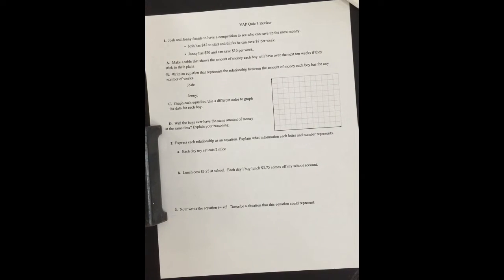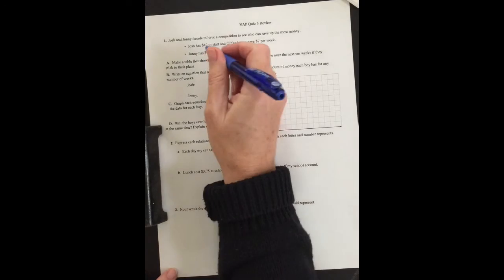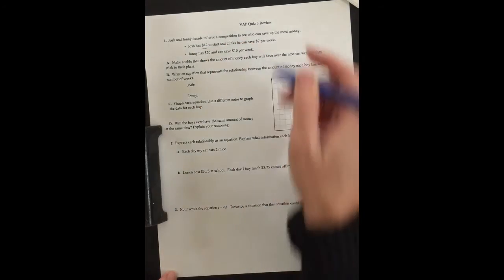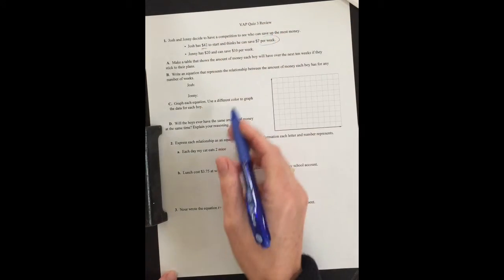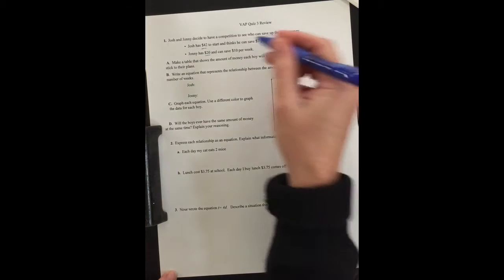Today I'll be going over a VAP quiz 3 review. Josh and Johnny decide to have a competition to see who can save up the most money. Josh has $42 to start with and he thinks he can save $7 per week. Johnny has $20 and can save $10 per week. Make a table that shows the amount of money each boy will have over the next 10 weeks if they stick to their plan.